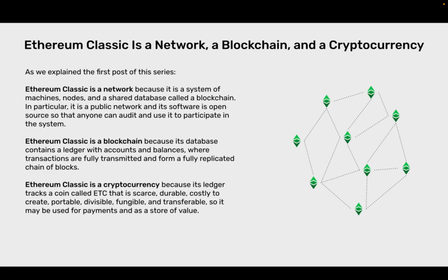Ethereum Classic is a network, a blockchain and a cryptocurrency. As we explained in the first post of this series, Ethereum Classic is a network because it is a system of machines, nodes and a shared database called a blockchain. In particular, it is a public network and its software is open source so that anyone can audit and use it to participate in the system.